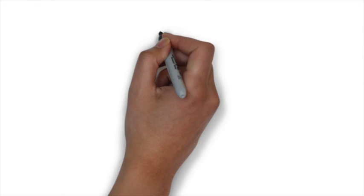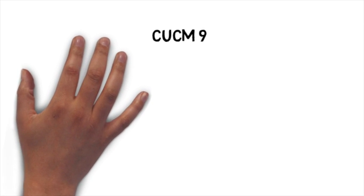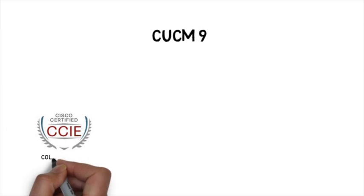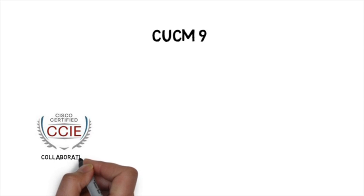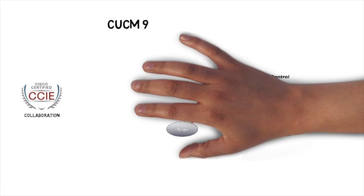Hi, I'm Kevin Wallace and if you're working with Cisco Unified Communications Manager, you need to know what's new in version 9. So in this video, I want to show you what I consider to be one of the 9 most important changes in version 9. Version 9 is the version you need to know for the new CCA collaboration certification. It's going to be highly relevant for the next few years and it has some serious enhancements to prior versions.